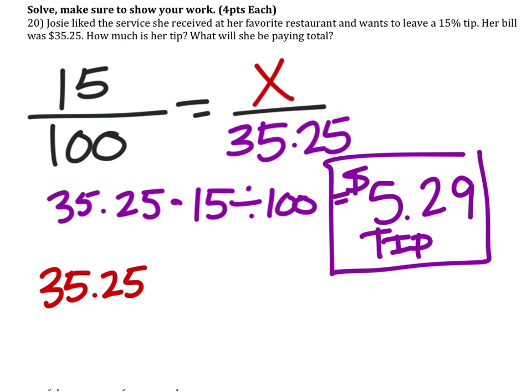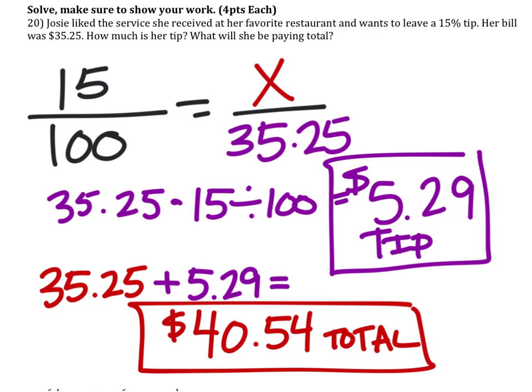And to find how much she'll be paying total, we're just going to add this $5.29 in. And that would give us $40.54 total. So that will be her total bill after the tip.